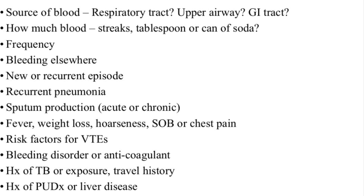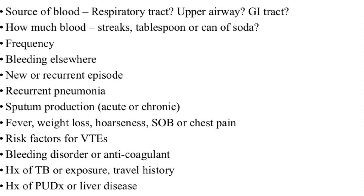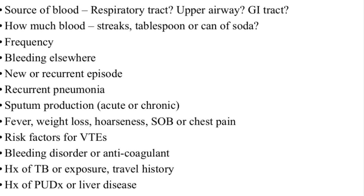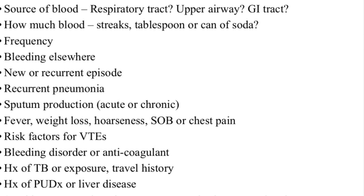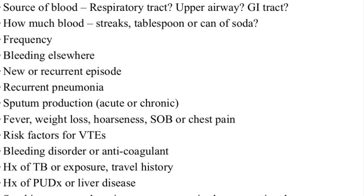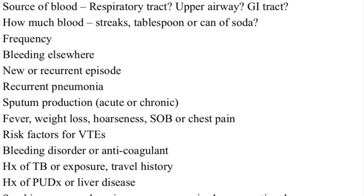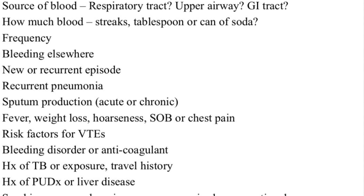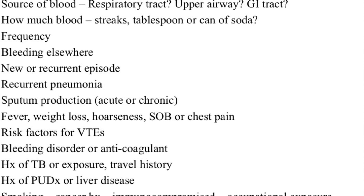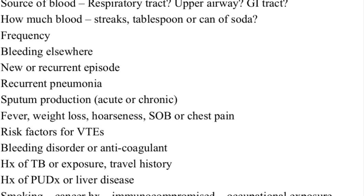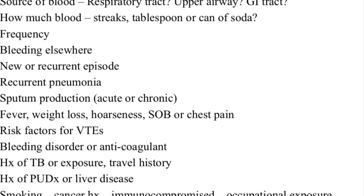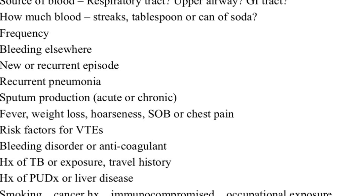After taking the history based on our findings, we would be able to tailor our differential diagnosis to come up with an accurate diagnosis. Once we've confirmed that this is indeed hemoptysis, our differential diagnoses would include bronchitis, pneumonia, pulmonary embolism, lung malignancy, and bronchiectasis. We can then narrow down based on our clinical history and physical examination to an accurate diagnosis.